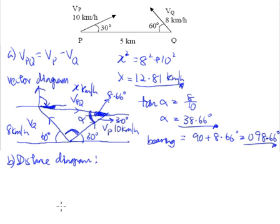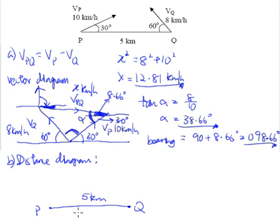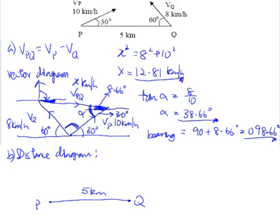To construct the distance diagram, the first step is always to figure out the initial positions of P and Q. As per what the diagram shows us, P is to the left of Q. So we place P here and Q here — this is the initial position. The next thing to do is to use what we have found from our vector diagram in Part A. The relative vector VPQ is extremely important here.